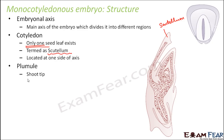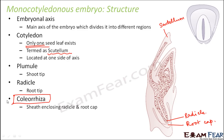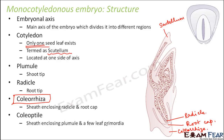The monocot embryo also has a plumule (shoot tip) and a radicle (root tip). Just below the radicle is the root cap — the covering of the root tip. Something different in the monocot embryo not present in the dicot embryo is the coleorrhiza, which is a sheet enclosing the radicle and root cap. Similarly, there is a coleoptile which covers the plumule and a few leaf primordia.